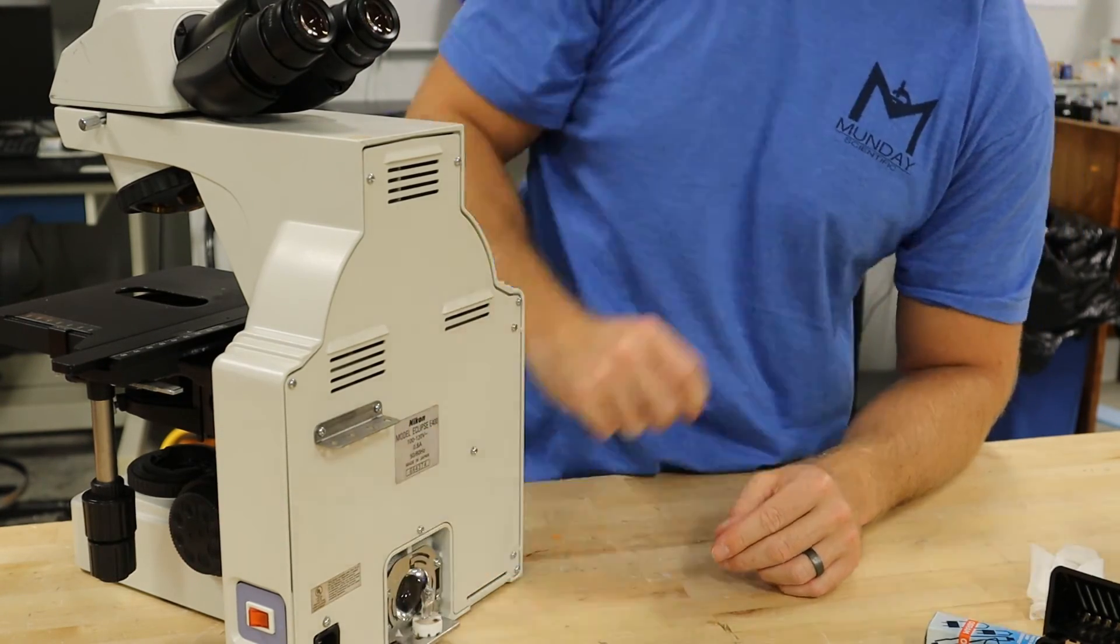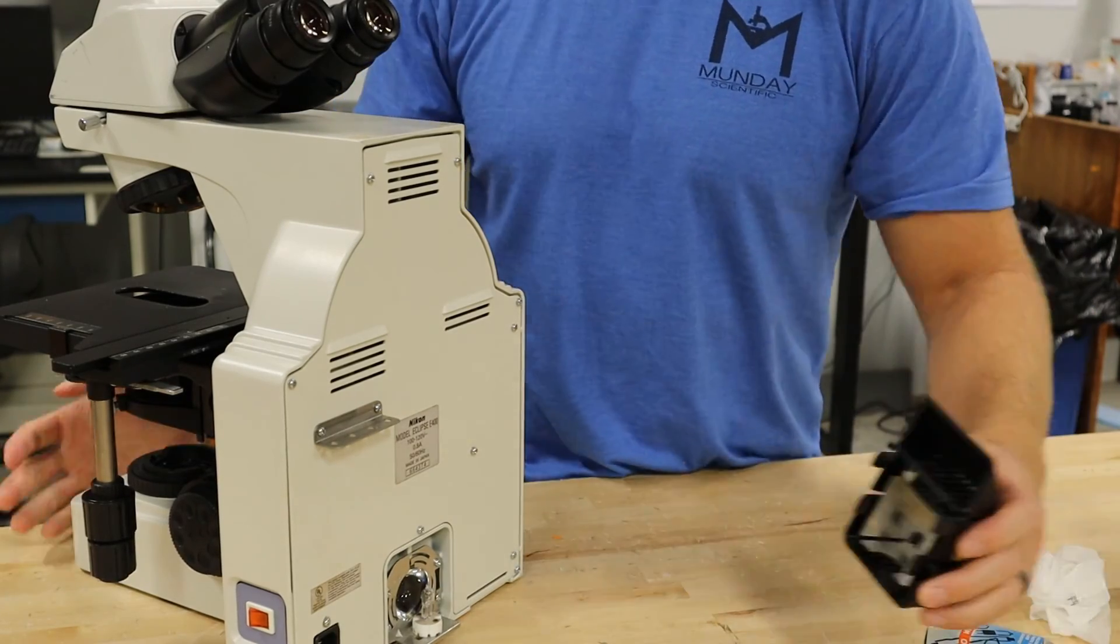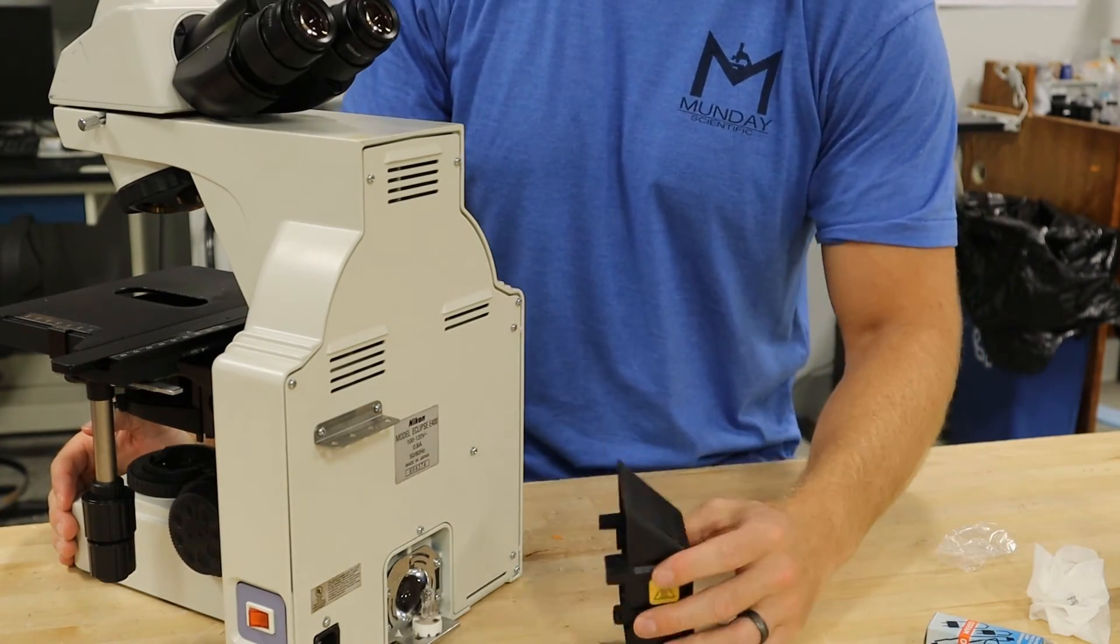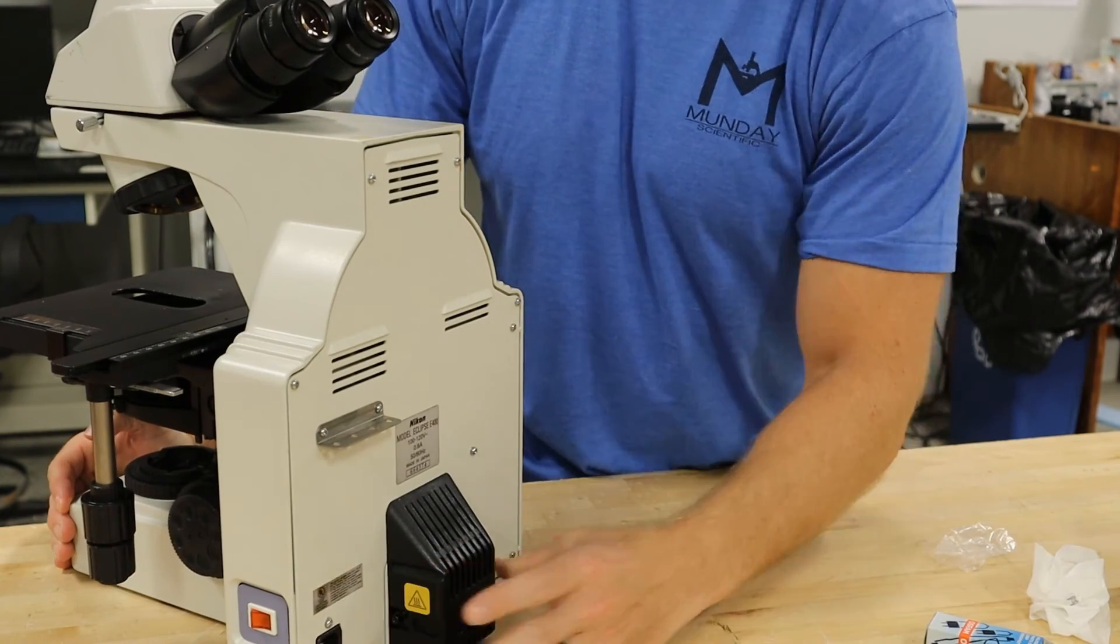Put that in the two prongs there. Your bulb's changed, it's ready to use, and then you just attach the lamp house.